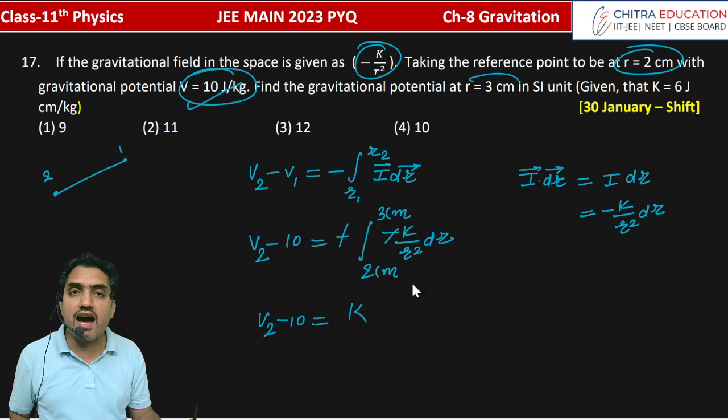K, and 1 by R square integration is minus 1 by R.